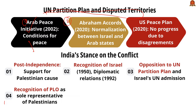The Abraham Accords were signed in 2020 by the UAE, Bahrain, and Israel, mediated by the USA, to normalize ties between Arab Gulf states and Israel. The Middle East Peace Plan, also known as 'Peace to Prosperity,' was announced by the USA in 2020 as a vision to improve the lives of Palestinian and Israeli people, but it did not materialize due to differences of opinion.